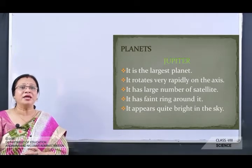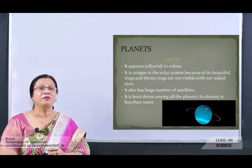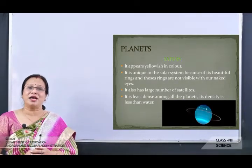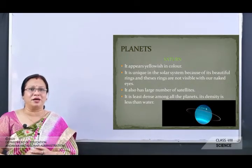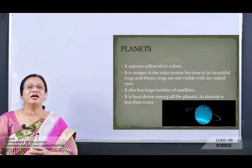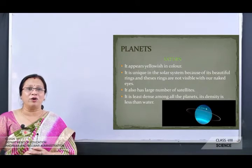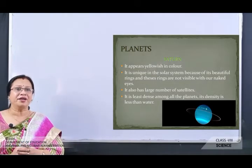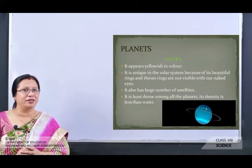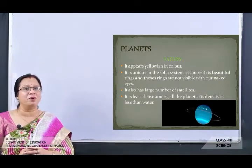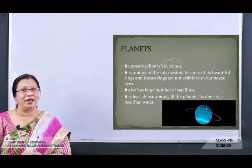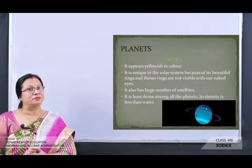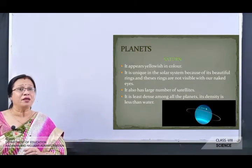The next planet is Saturn. It appears yellowish in color and is unique in the solar system because of its beautiful rings, which are not visible to the naked eye. It has a large number of satellites. Saturn is the least dense among all the planets — its density is even less than water.